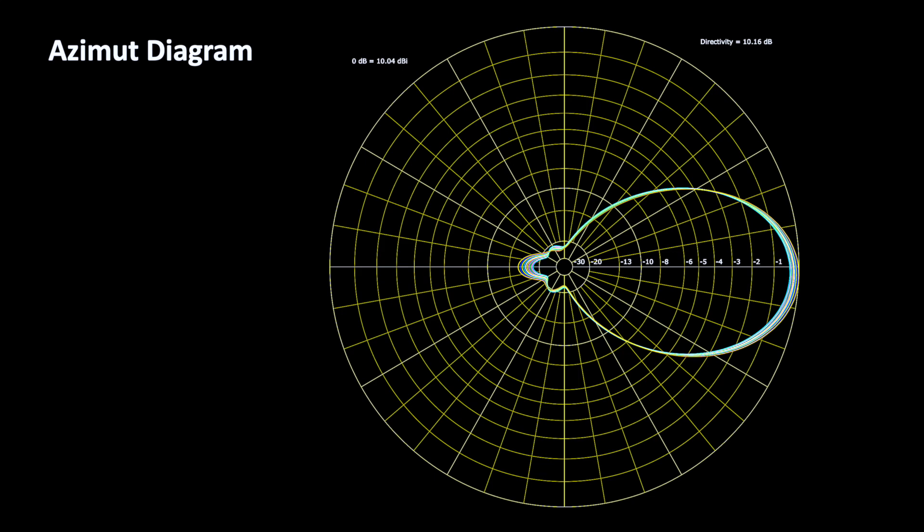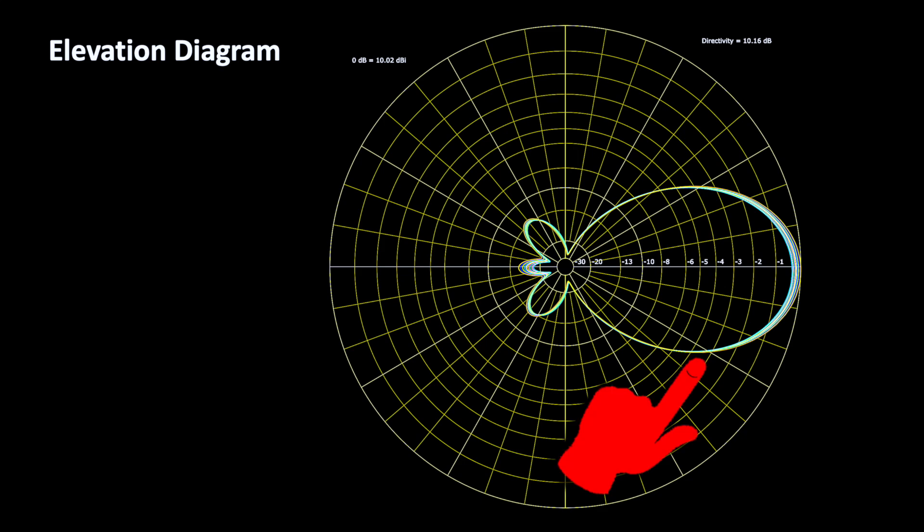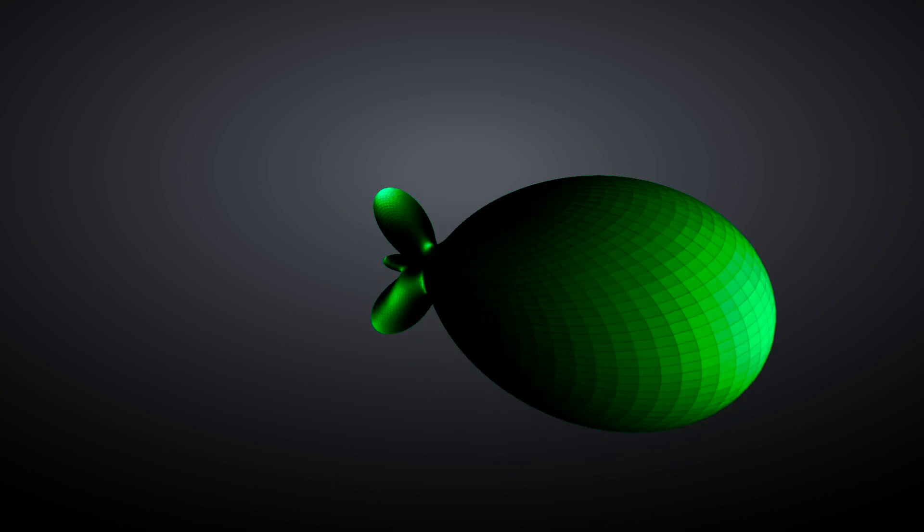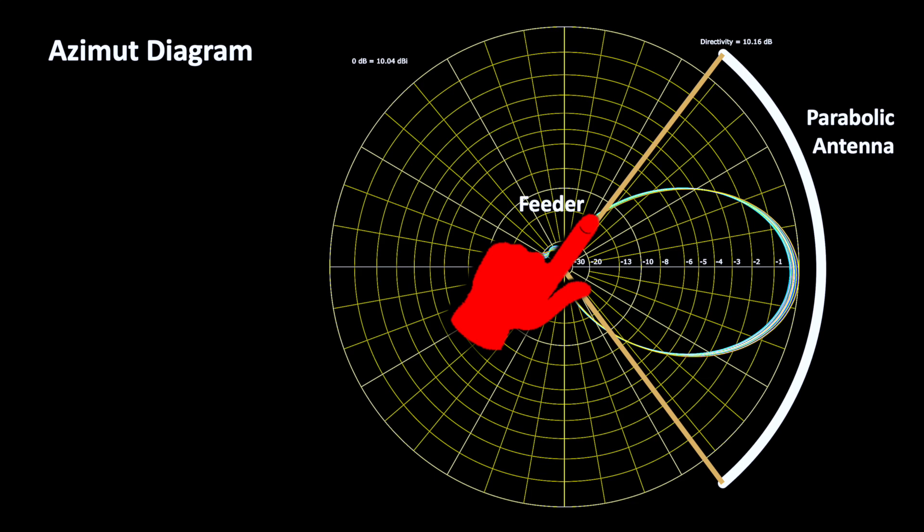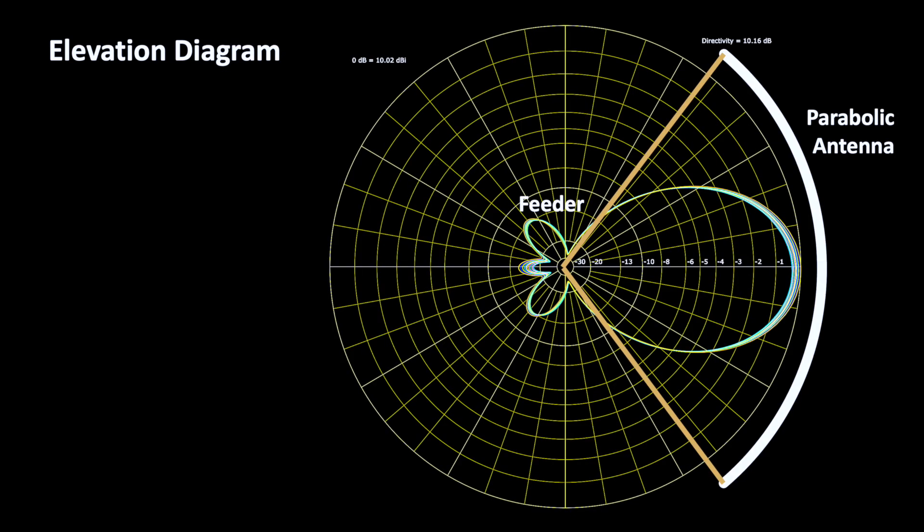Both the azimuth and the elevation diagram have a 3dB beam width of about 56 degrees, so the three-dimensional radiation pattern is almost rotation symmetric. At a beam width of 120 degrees corresponding to the aperture of the parabolic mirror, the radiation from the feeder has dropped well below minus 10 dB. So, almost the complete radiation is reaching the feeder. In reality, the side lobes are smaller, because a wire grid model is more permeable to electromagnetic waves than a conducting surface.